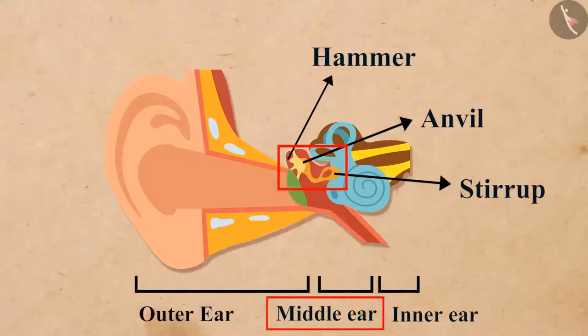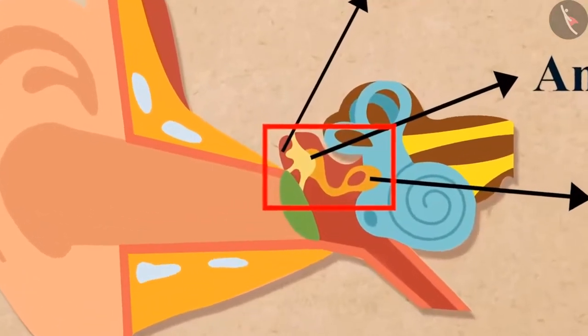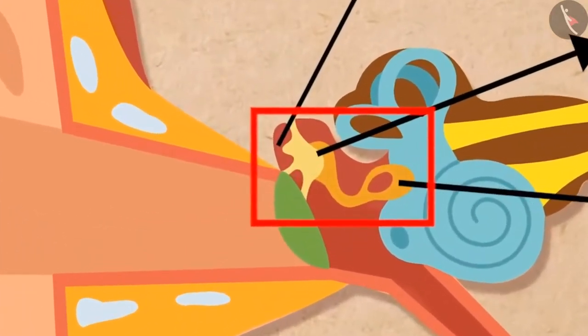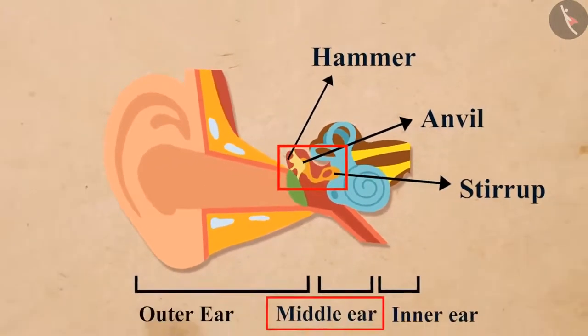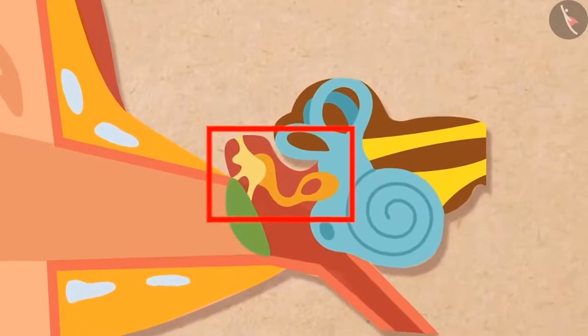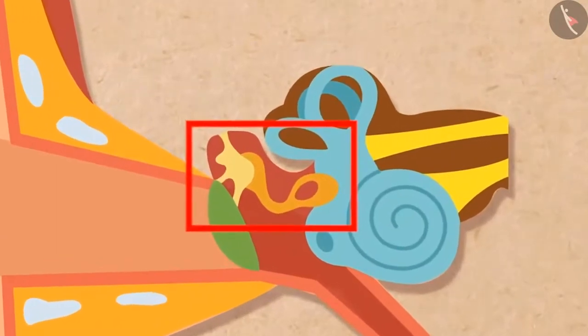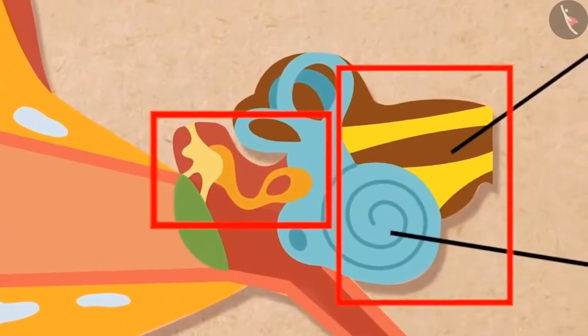Then the three bones, the hammer, the anvil, and the stirrup of the middle ear, amplify the vibrations. After that, the middle ear transmits the amplified pressure variations received from the sound wave to the inner ear.